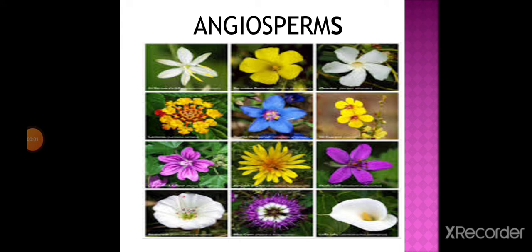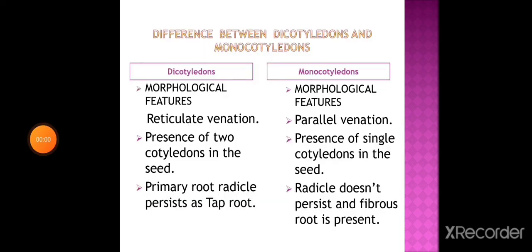Seeds with two cotyledons are called dicotyledons; seeds with a single cotyledon are called monocotyledons. The current Angiosperm Phylogeny Group (APG) system of classification does not recognize dicots as a monophyletic group - meaning descending from a single ancestral species. Plants traditionally classified under dicots are dispersed in several clades, such as early magnolids and eudicots.